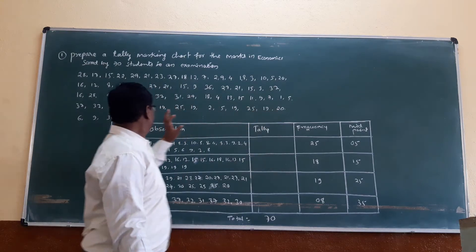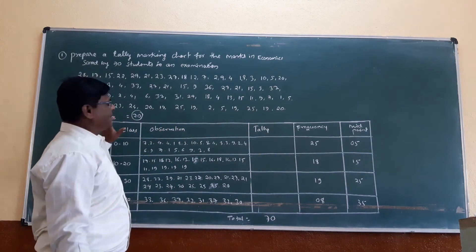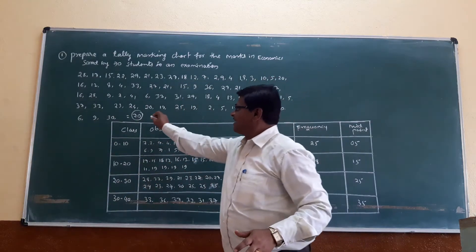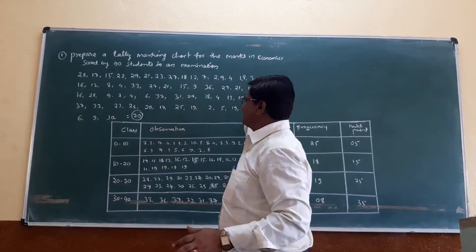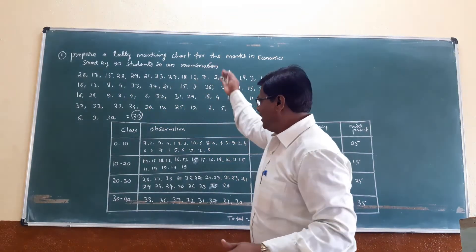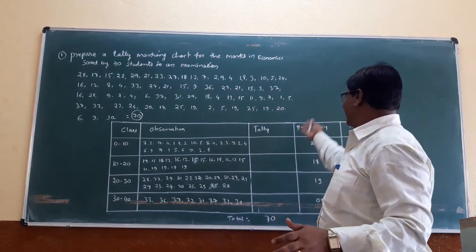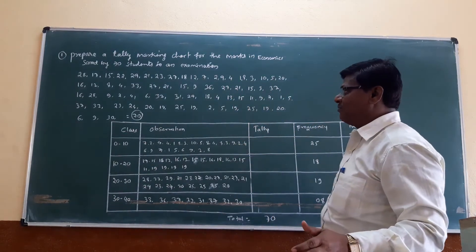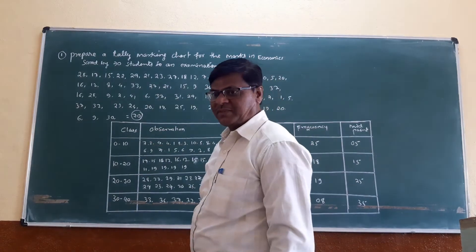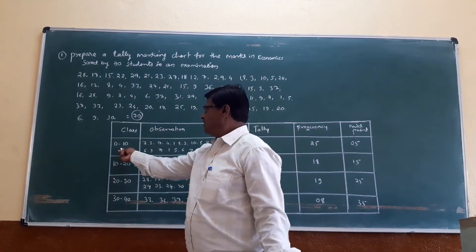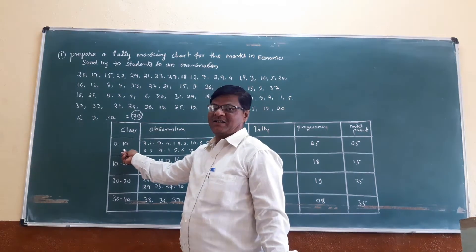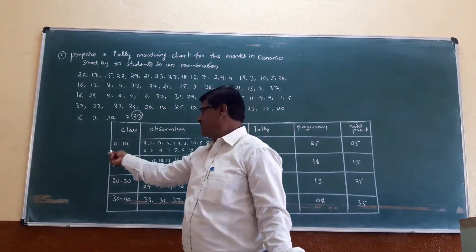The total observations are 70, scored by the students. You have to find out the tally, frequency, and midpoint for each class. The first class is 0 to 10.